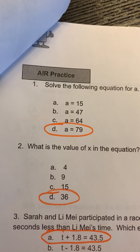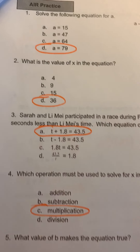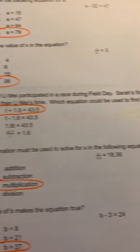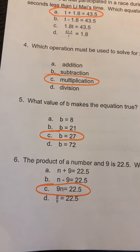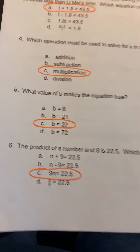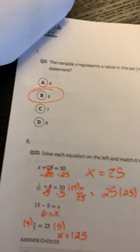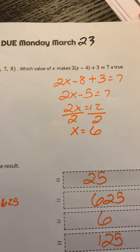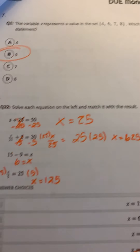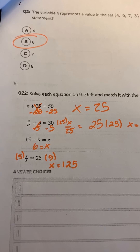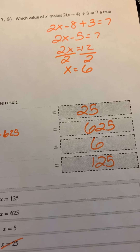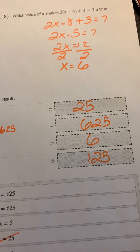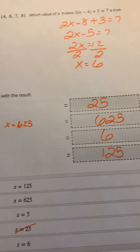Page three: number one is D, number two is D, number three is A, number four C, number five C, and number six C. Number seven is B, and here is the math that I did to solve that. Number eight: X equals 25, X equals 625, X equals 6, and X equals 125. There's the math for that.